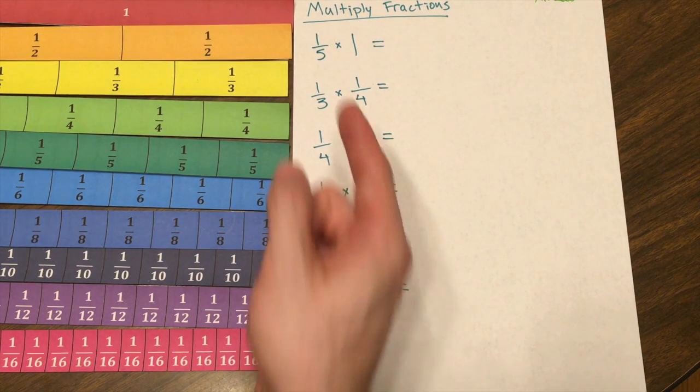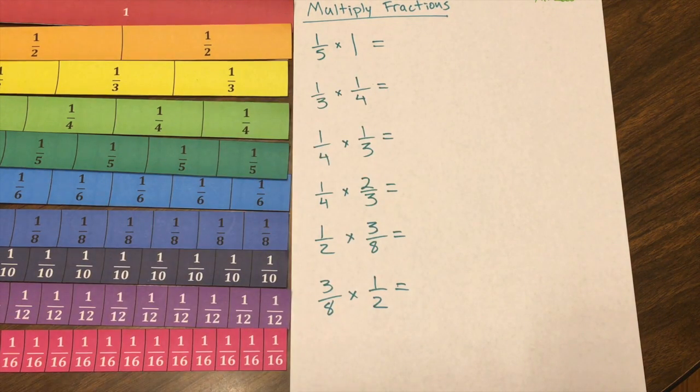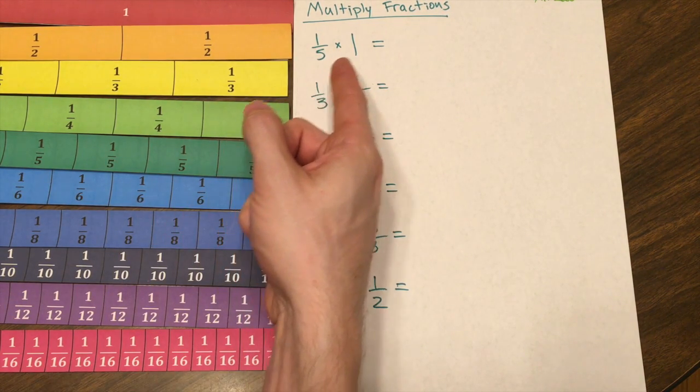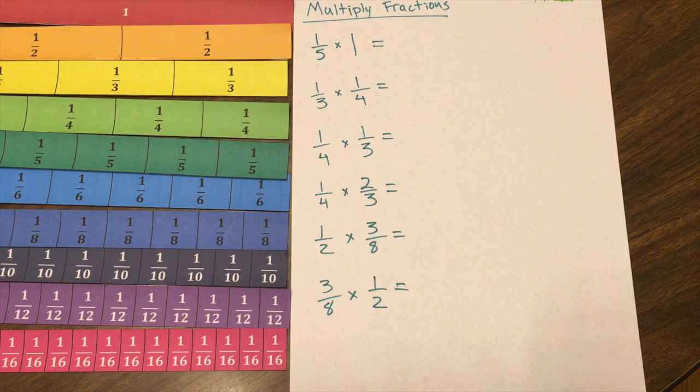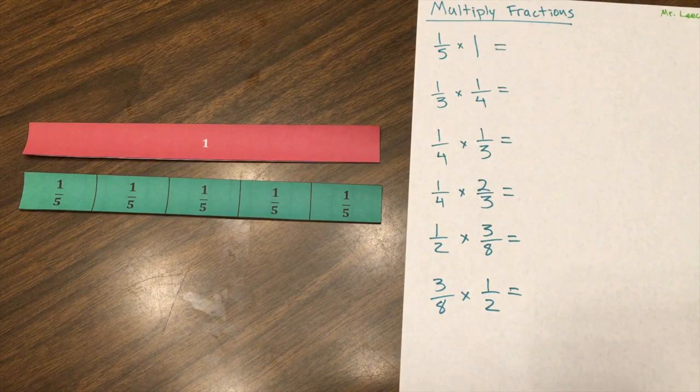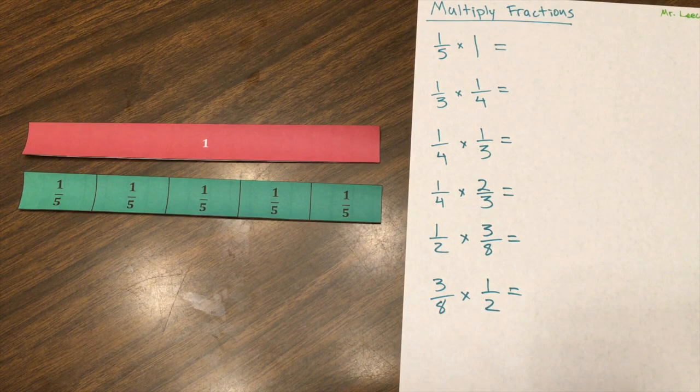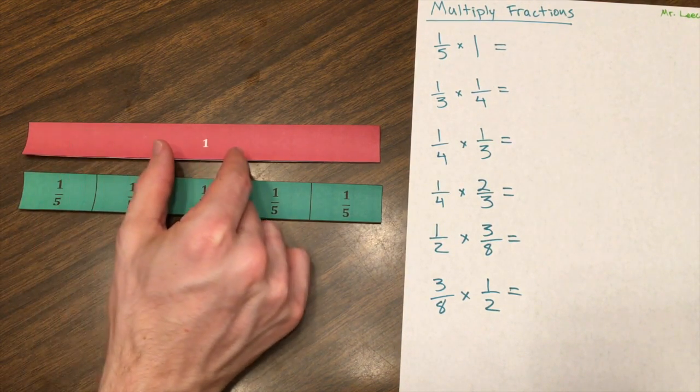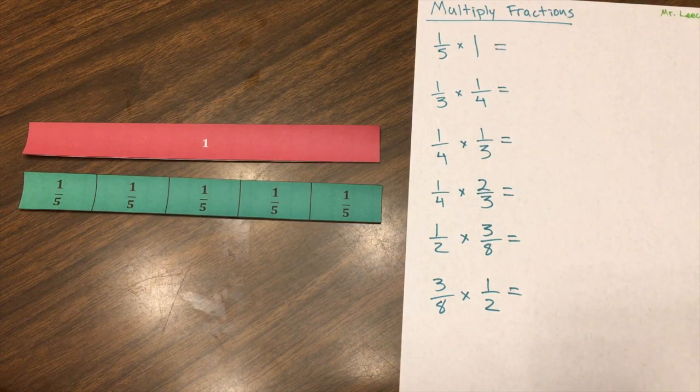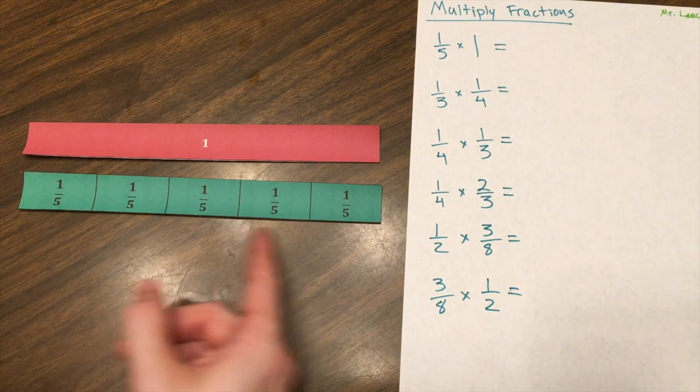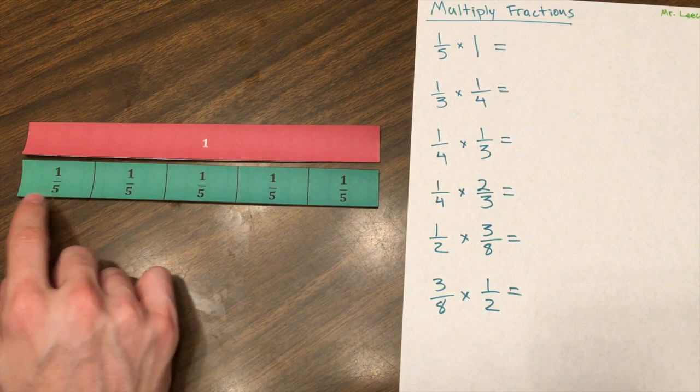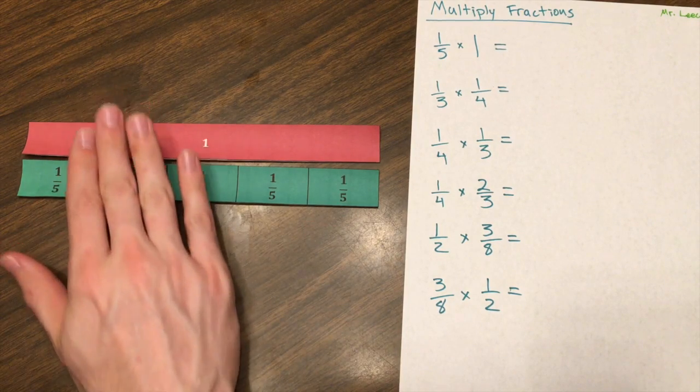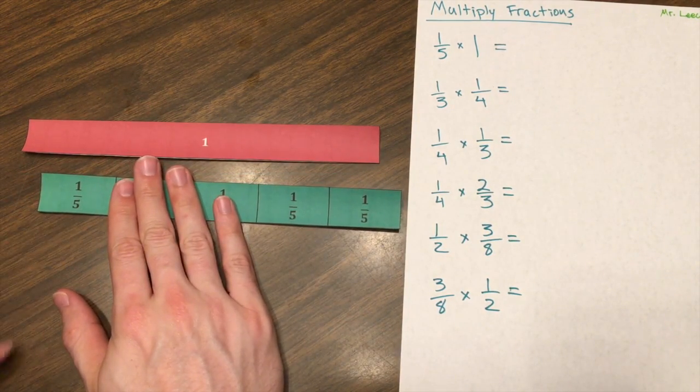Let's see how we can model multiplying one-fifth times one. Another way of saying one-fifth times one is what is one-fifth of one? So I'm going to get rid of all the strips except for one-fifth and one. I want to find out what is one-fifth of one. I want to see what's the value when I split one up into five equal parts. And that's exactly what this one-fifth strip does. As you can see, it's five equal parts, so one of those five equal parts is just one-fifth. So my solution is just this one-fifth.